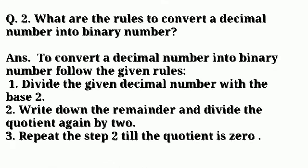Now the second question is what are the rules to convert a decimal number into binary number? Answer: to convert a decimal number into binary number, follow the given rules. First, divide the given decimal number with the base 2. Second, write down the remainder and divide the quotient again by 2. Third, repeat step 2 till the quotient is 0.